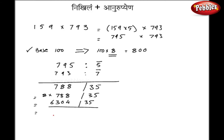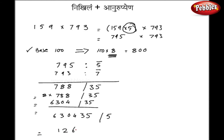So combining the numbers gives 630435. But mind well, we have multiplied one of the numbers by 5, so my final answer must be divided by 5. Dividing 630435 by 5 gives 126087. Now this is my final answer.